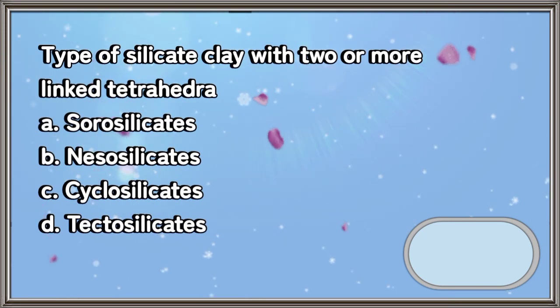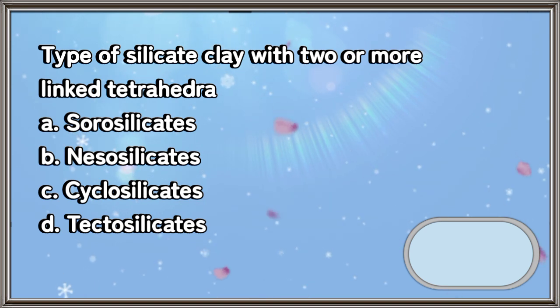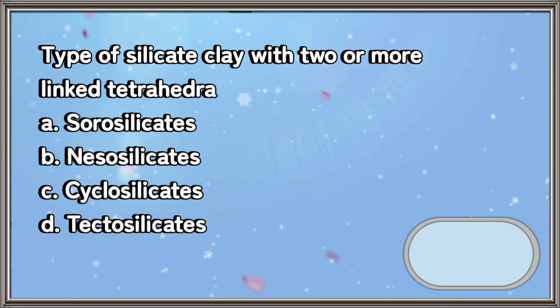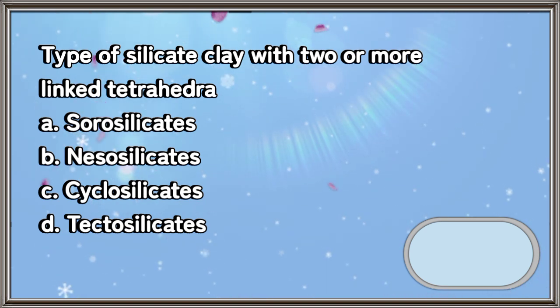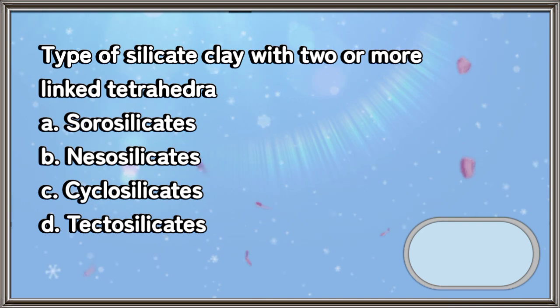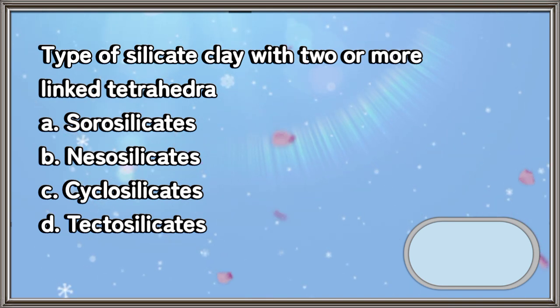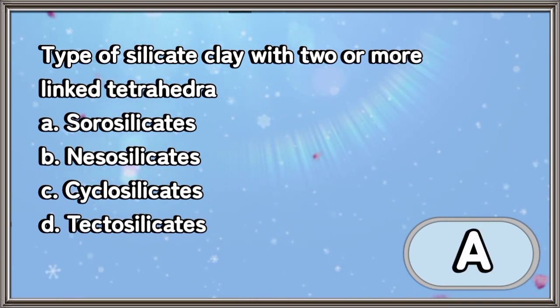Type of silicate clay with two or more linked tetrahedra: A. Sorosilicates, B. Nesosilicates, C. Cyclosilicates, D. Tectosilicates. The answer is letter A.